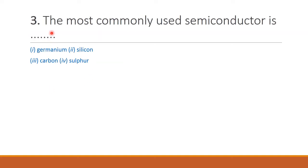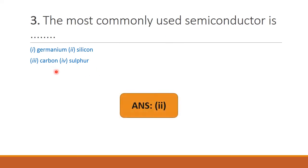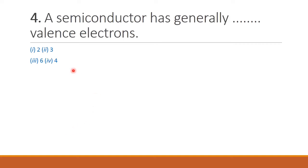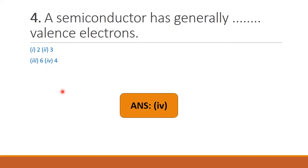Next question: the most commonly used semiconductor is — option 1 germanium, option 2 silicon, option 3 carbon, option 4 sulfur. The most commonly used semiconductor is silicon, so option 2 is the right answer. Next question: a semiconductor generally has dash valence electrons. A semiconductor has 4 valence electrons, therefore option 4 is the right answer.